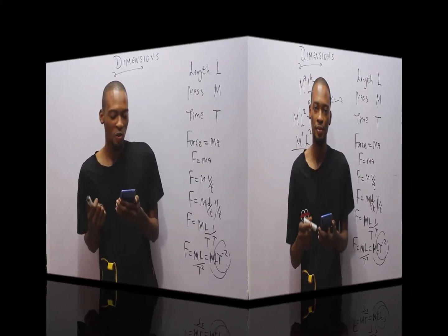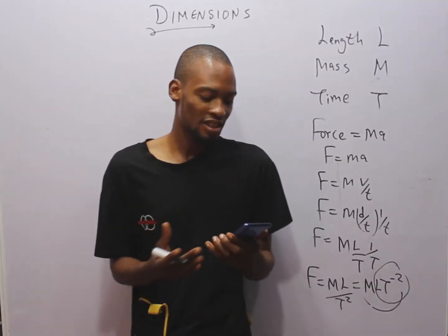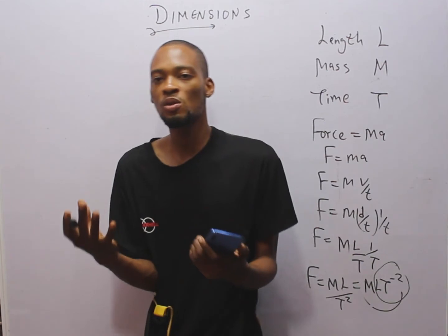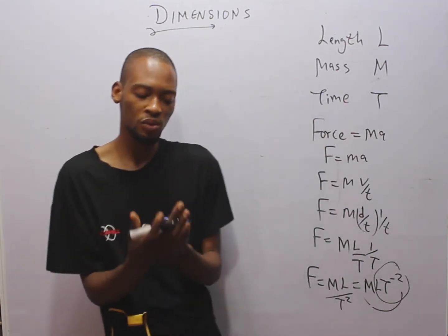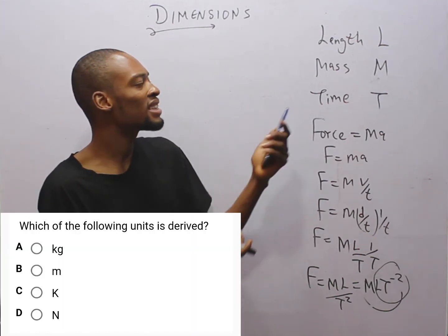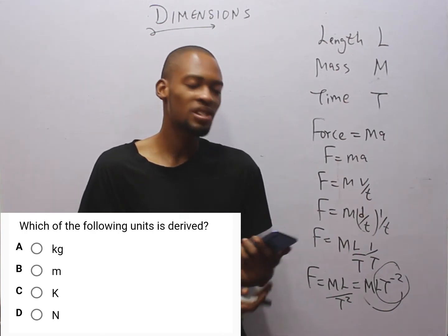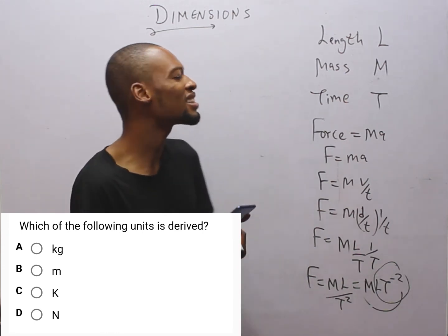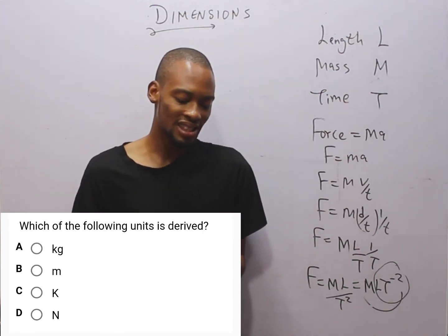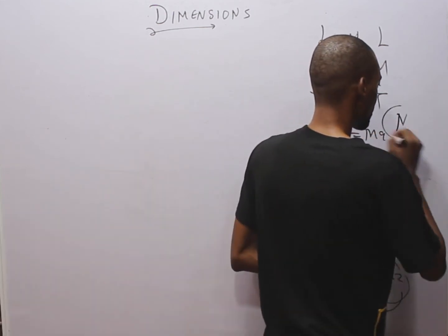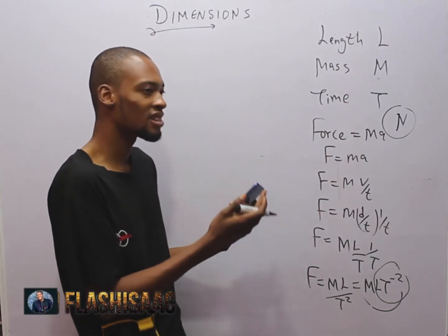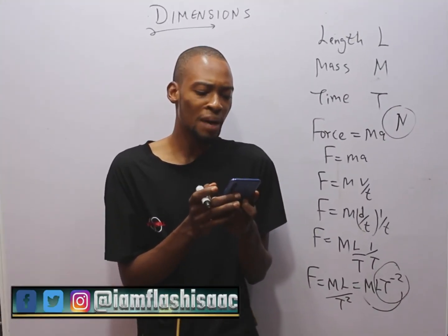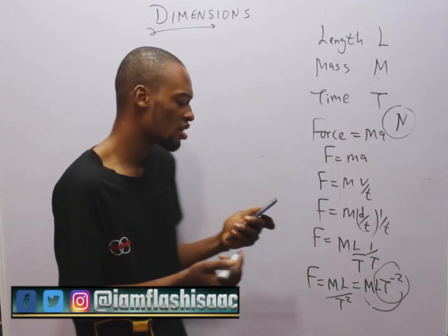The next question asks: which of the following units is derived? A derived unit is the unit of a derived quantity. Option A — kilogram — is the unit of mass, a fundamental quantity. Option B — meter — is the unit of length, a fundamental quantity. Option C — Kelvin — is the unit of temperature, also a fundamental quantity. Option D — N (Newton) — is the unit of force, and force is a derived quantity. So option D, Newton, is the correct derived unit.